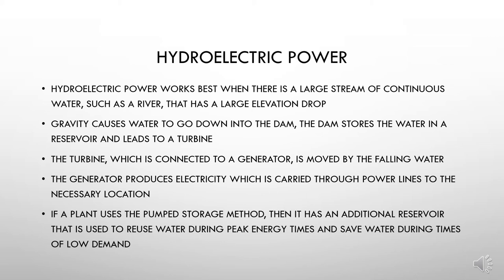Gravity causes water to go down into the dam. The dam stores the water in a reservoir and leads it to a turbine. The turbine, which is connected to a generator, is moved by the falling water. The generator produces electricity, which is carried through power lines to the necessary location. If the plant uses the pumped storage method, it has an additional reservoir that is used to reuse water during peak energy times and save water during times of low demand.